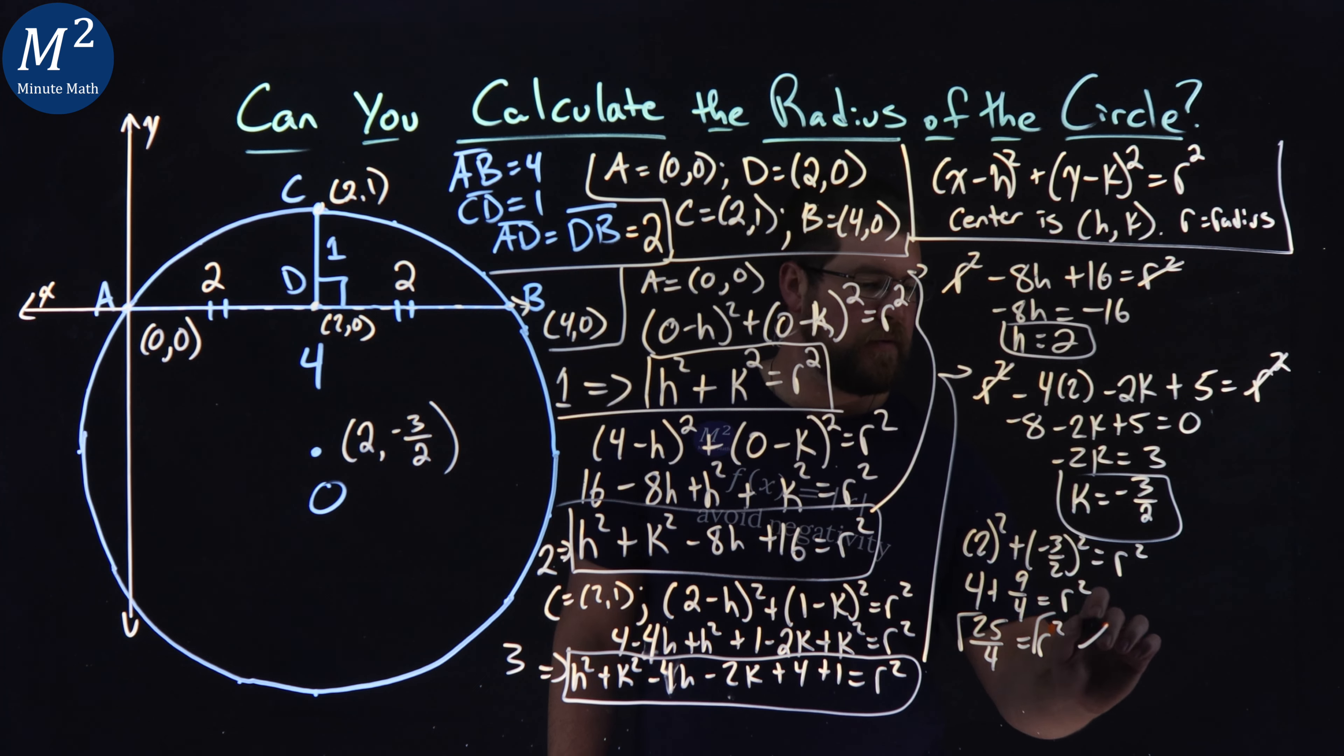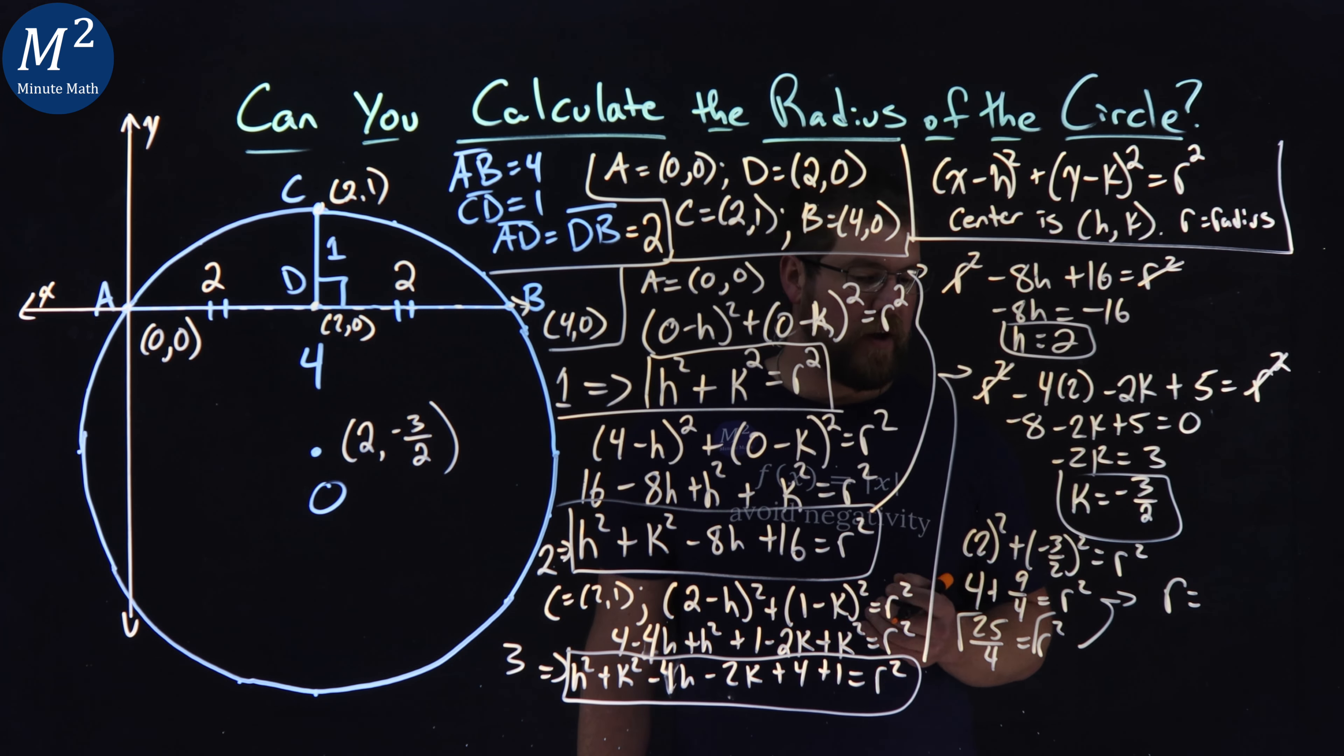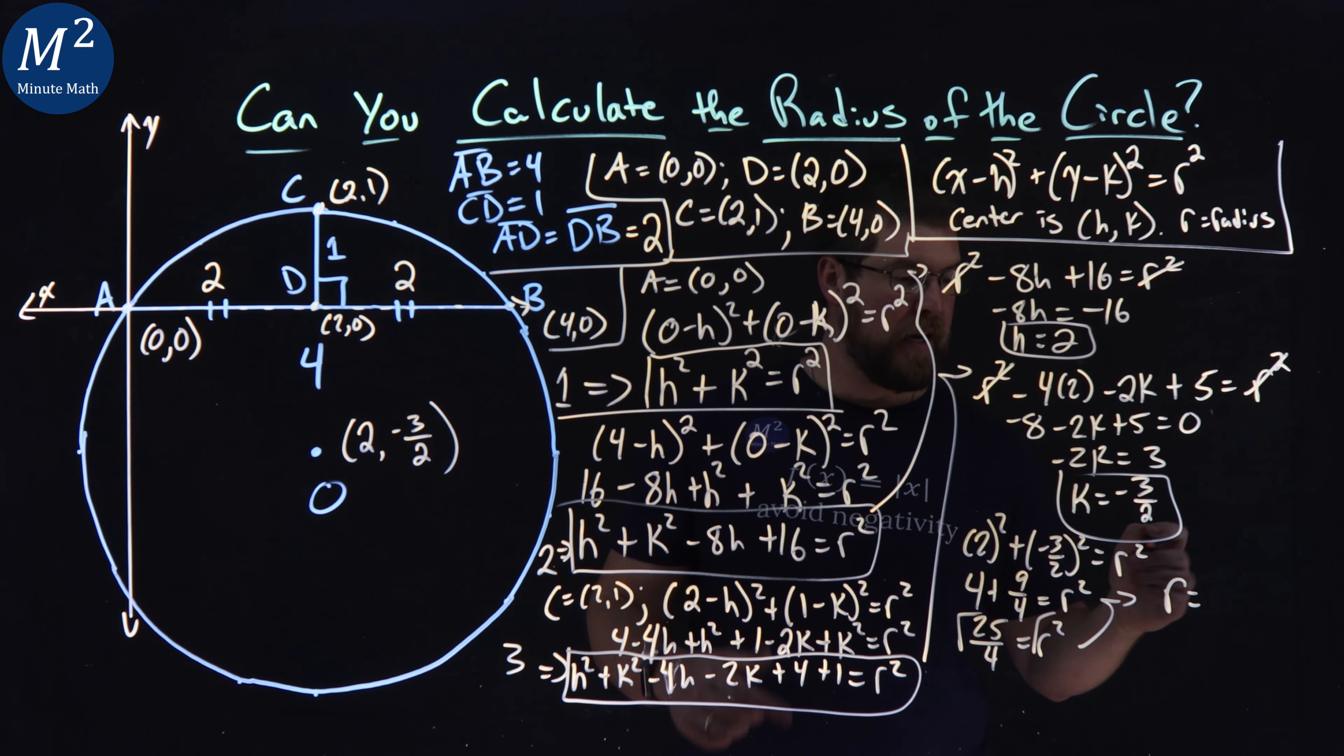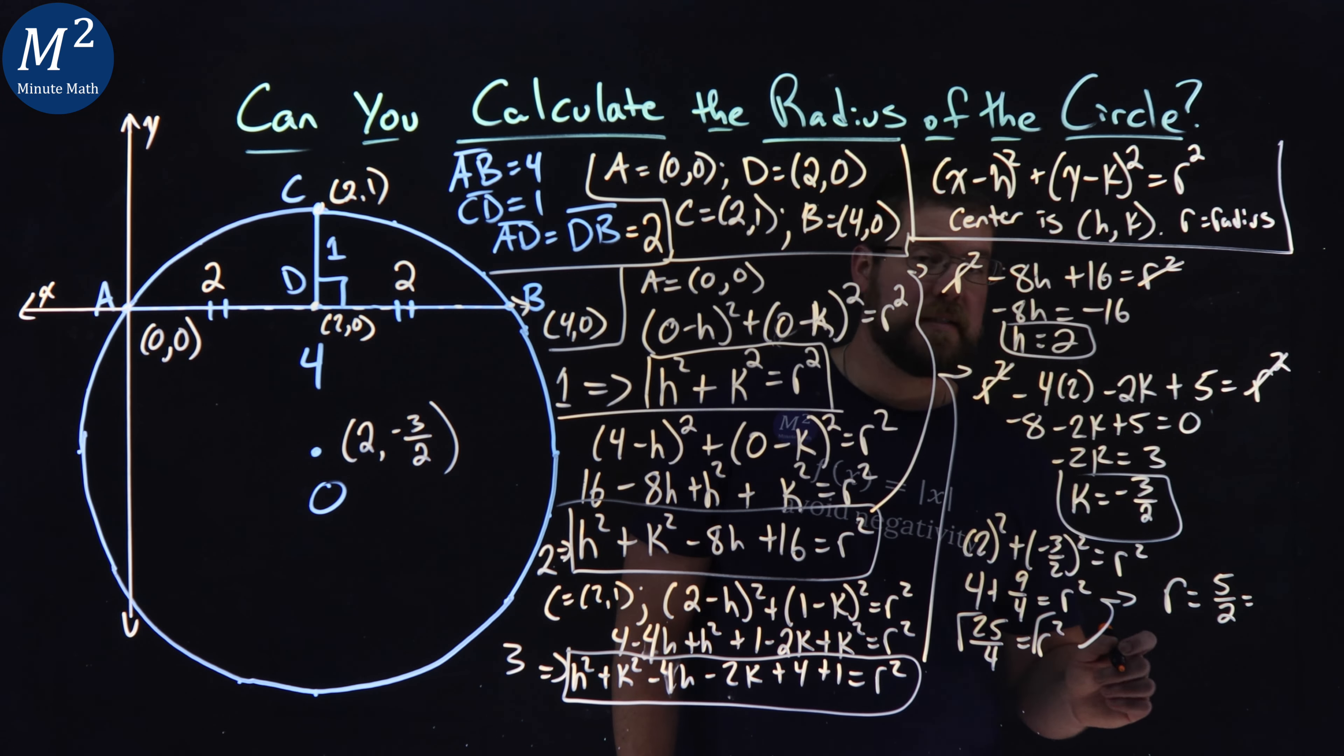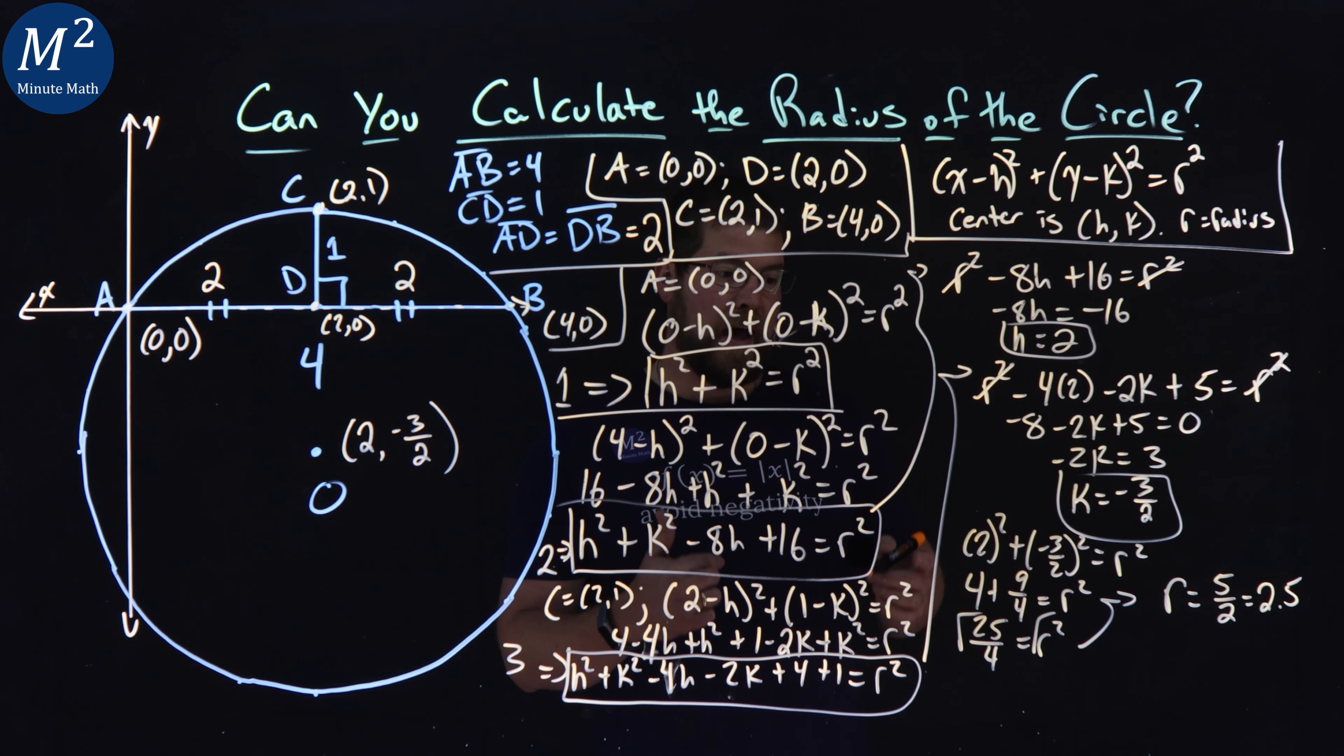We add these two together right here. Four plus nine fourths is 25 fourths is equal to R squared. We square root both sides here. And we have R is equal to square root 25 over 4, which each one's a perfect square, which is great, which is five halves. Or if you need to see that, that's 2.5.